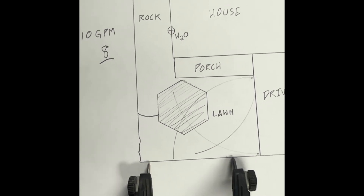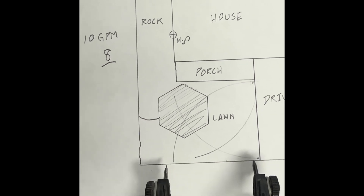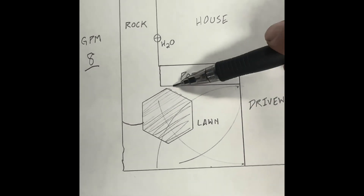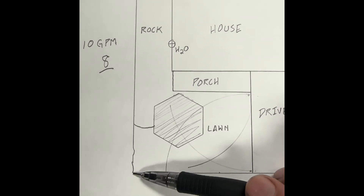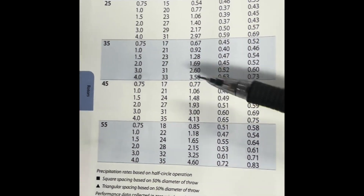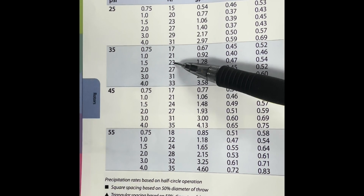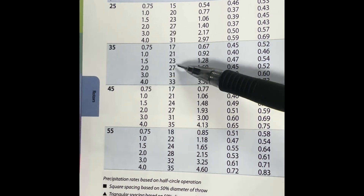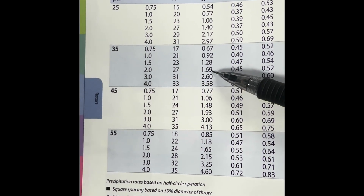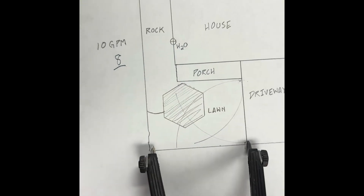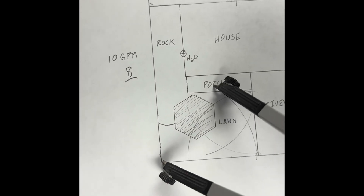If I put one here in the corner I'll get head-to-head, but I'll still be missing the far corner. That distance is about 25 feet, so we need a different nozzle for that corner head. Looking at the chart, the number one nozzle covers 20 feet at 0.92 GPM, and the number 1.5 only shoots about 23 feet. We need to go up to a number 2 nozzle — that gets us 27 feet, so we're covered, and it uses 1.69 gallons per minute. So in that far corner we'll use a number 2 nozzle shooting 27 feet — it might hit the porch a little but we can adjust that.